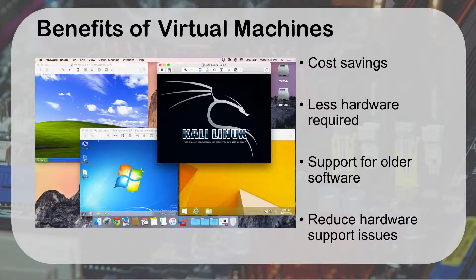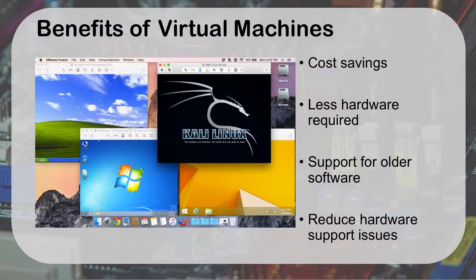Some of the benefits of virtualization include cost savings — instead of having four machines, one machine can do all the work of four. It's less hardware required. You can also support older software; for instance, Windows XP is no longer supported by Microsoft, but you can still run it in a virtual machine without connecting to the internet and use it for old programs without it being a security risk. You can reduce hardware support issues through virtual desktop infrastructure, which is on the Series 9 exam. Essentially, it's a server environment that runs all the virtual machines, and your terminal at your desk is just a thin client with a web browser that reaches back to the server running the Windows OS you're using. It allows all security patches and updates to be managed without worrying about end user devices.